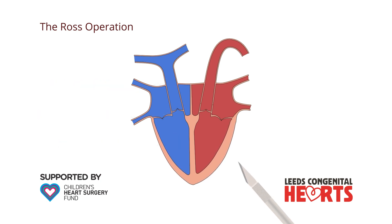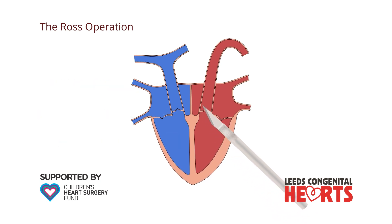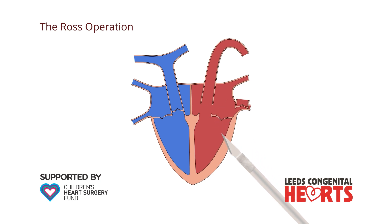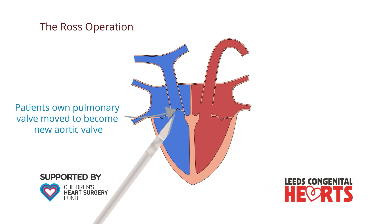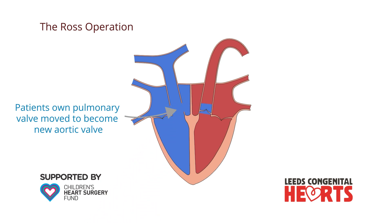In a ROS operation, the diseased aortic valve and a small amount of the aorta are removed. The patient's own pulmonary valve and a small amount of the pulmonary artery are also then removed and sewn into where the aortic valve used to be, to become the new aortic valve.